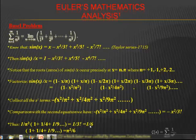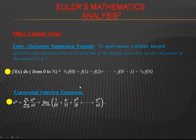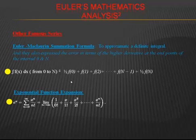Euler's ideas were taken up years later by Bernhard Riemann, who defined the zeta function and proved its basic properties. Riemann defined his zeta function as z(s) equal to the summation of 1 over n to the power s, where n goes from 1 to infinity. In addition, there are other famous formulas related to this area, like the Euler-Maclaurin summation formula to approximate the definite integral. Euler also used the Taylor series to expand e^x, getting 1 plus x over 1 factorial plus x squared over 2 factorial, and so on.